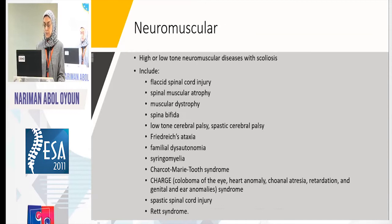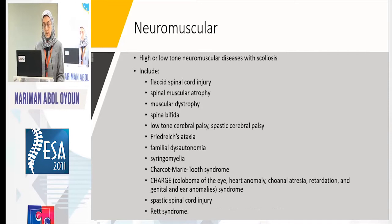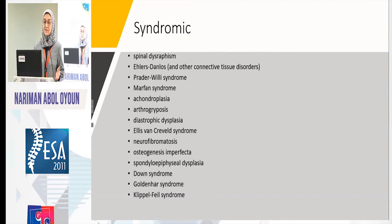Neuromuscular cases include high-tone or low-tone neuromuscular problems — like SMAs, muscular dystrophy, spina bifida, and CP. Syndromic cases are other syndromes known to be associated with scoliosis but that don't directly cause it, like Marfan syndrome, Ehlers-Danlos syndrome, and arthrogryposis. These syndromes are specifically listed in the 2014 paper.